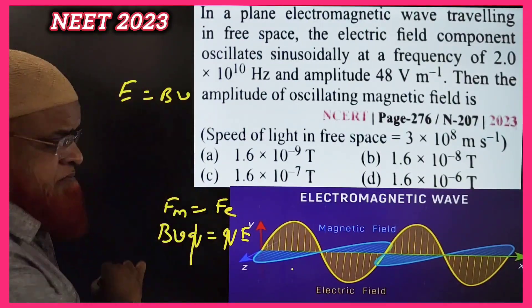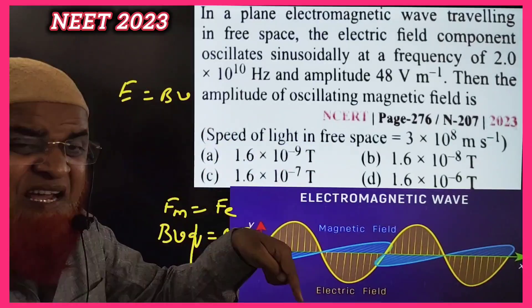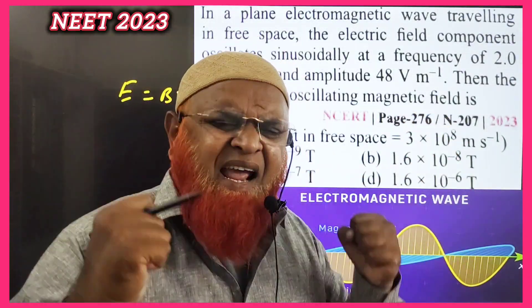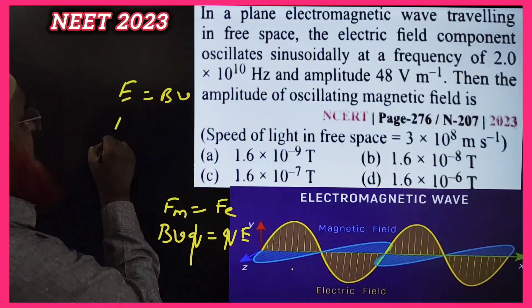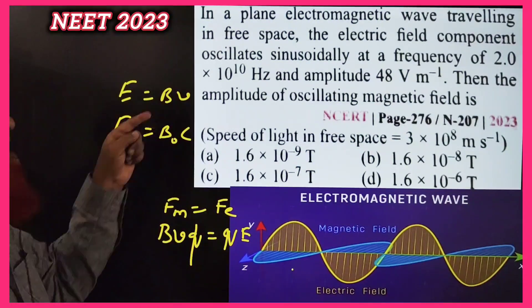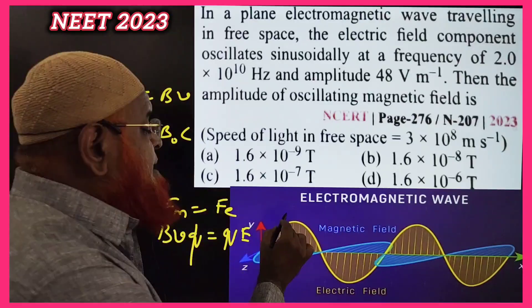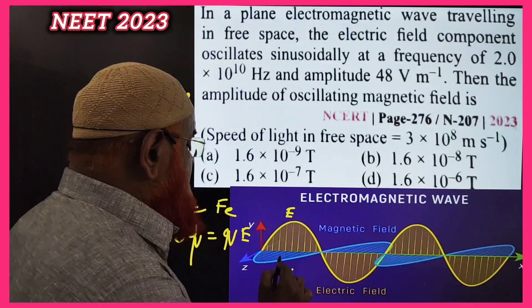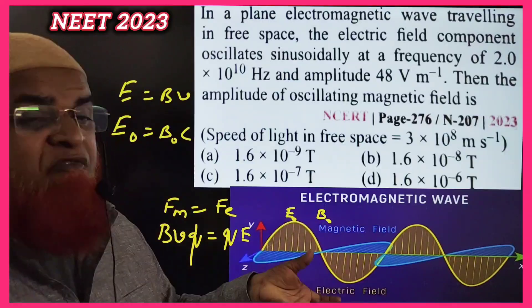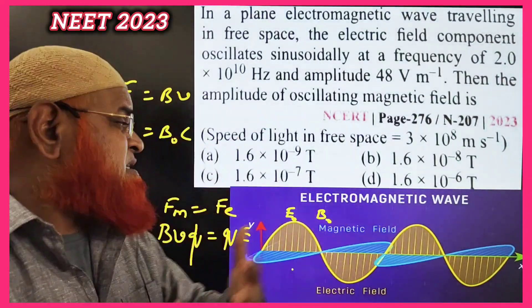V means velocity, but here you are considering an electromagnetic wave. Instead of ordinary velocity, you will take velocity of light. Then what happens? E₀ is equal to B₀ into c instead of v. E₀ means amplitude of electric wave and B₀ means amplitude of magnetic wave.